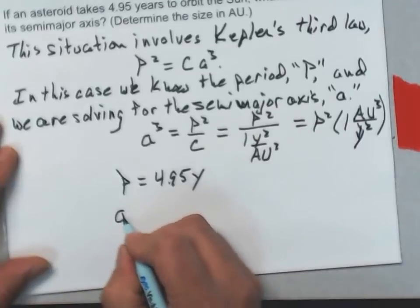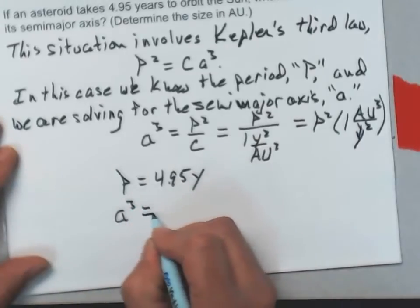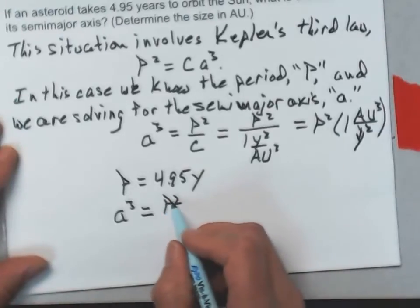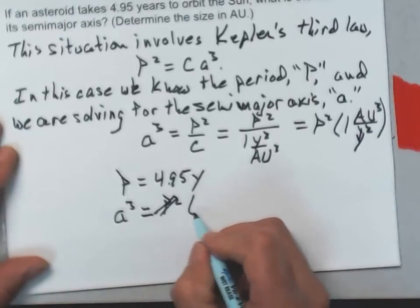P is 4.95 years, so A cubed is going to equal P squared. I know that value so I'm going to stick it in here.